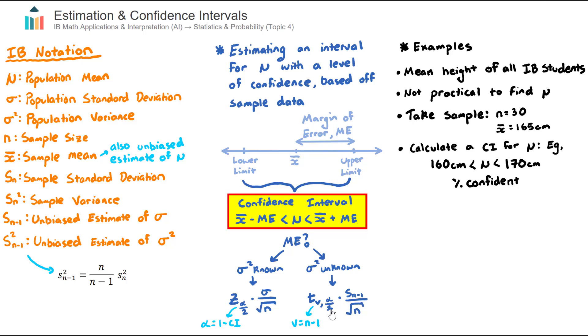So these two formulas here look a little bit intimidating, but once you practice a few questions of both, they're really not too bad. Let's just have a quick look now at two IB exam questions involving both knowing the population variance and not knowing the population variance, and looking at how do we actually go ahead and create a confidence interval.